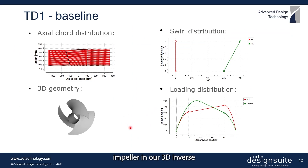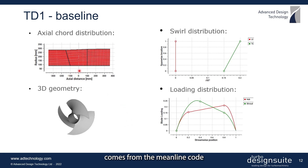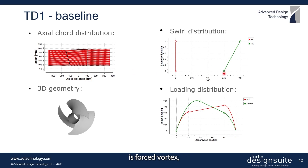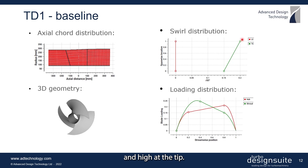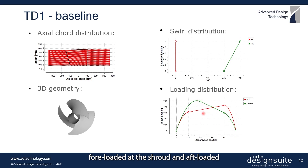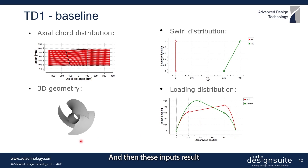This is the setup for the baseline impeller in our 3D inverse design software TurboDesign One. The axial core distribution comes from the mean line code as seen earlier. The spanwise RV-theta-star is actually forced vortex, so it's low at the hub with a linear variation and high at the tip. The loading distribution in this baseline case is forward loaded at the shroud and aft loaded at the hub.